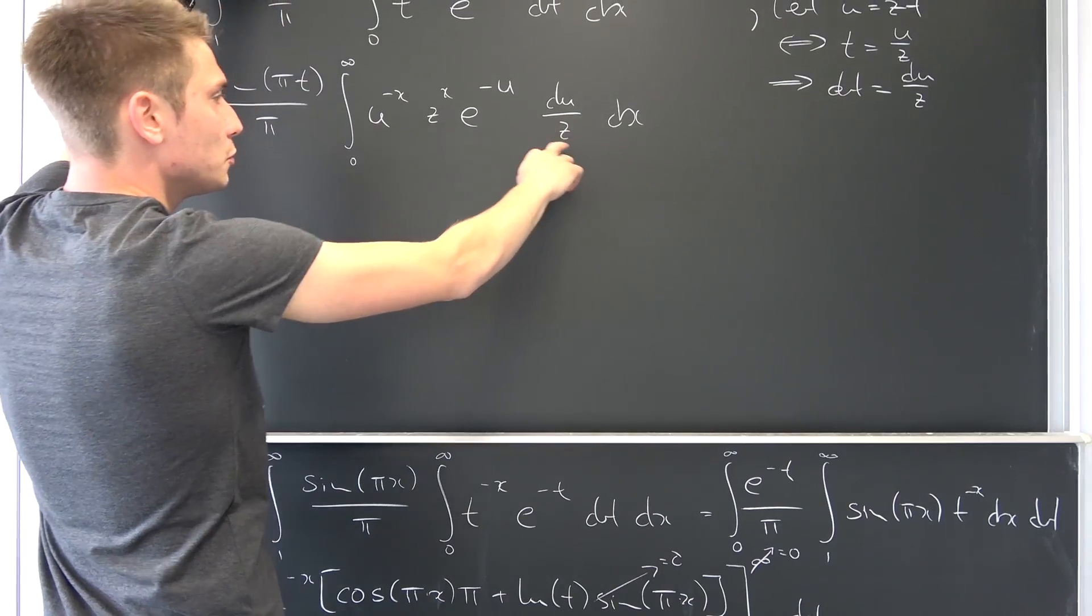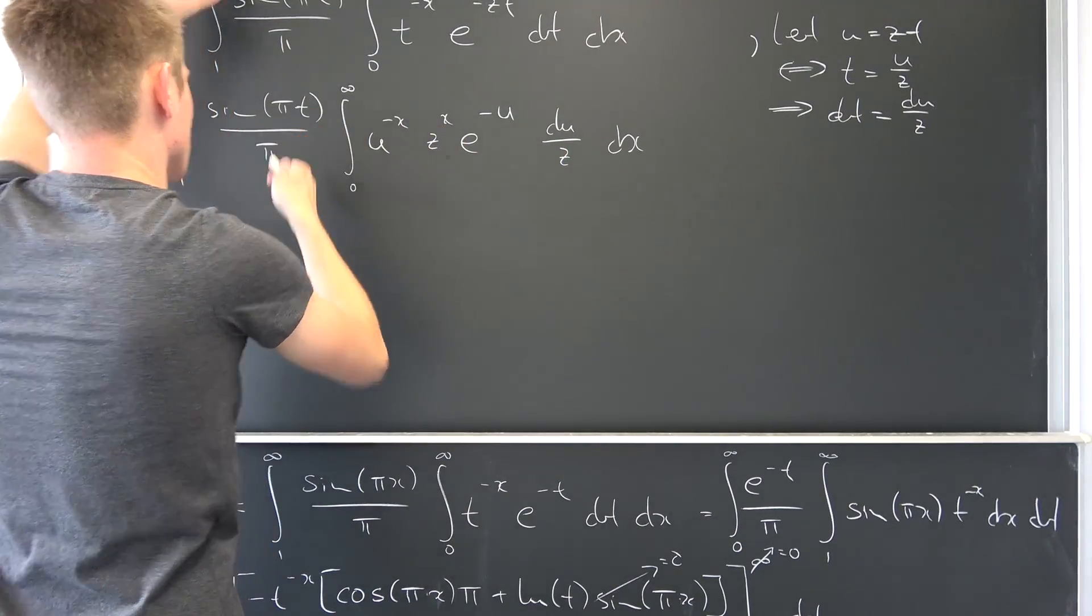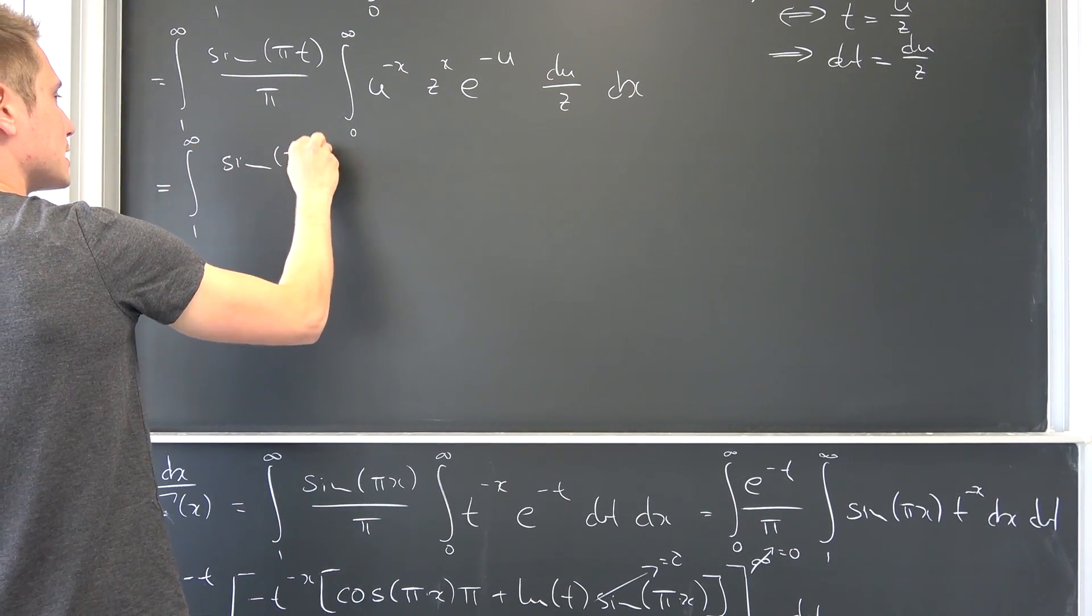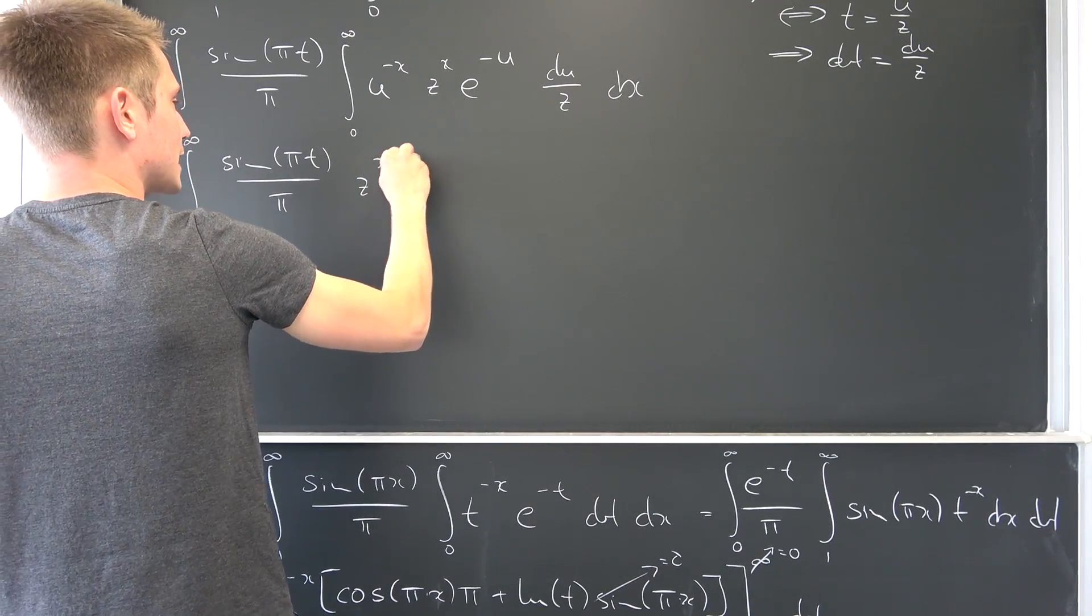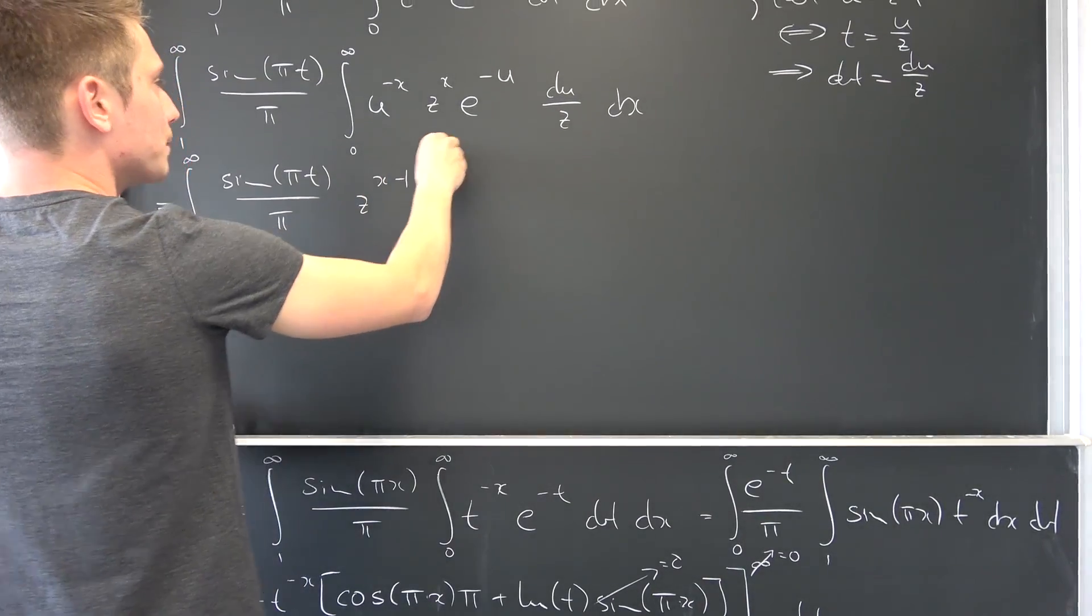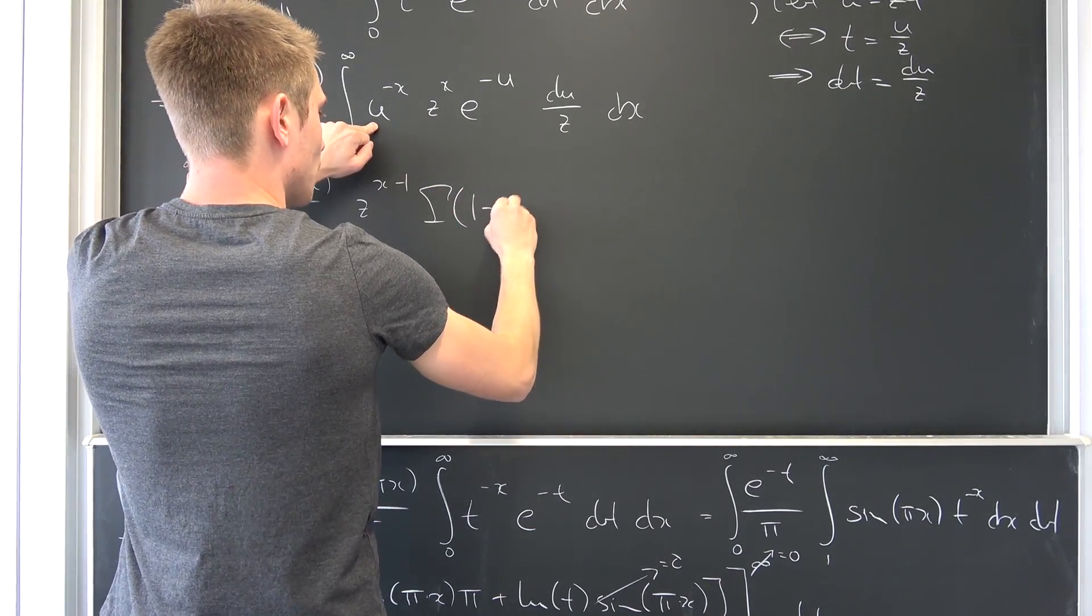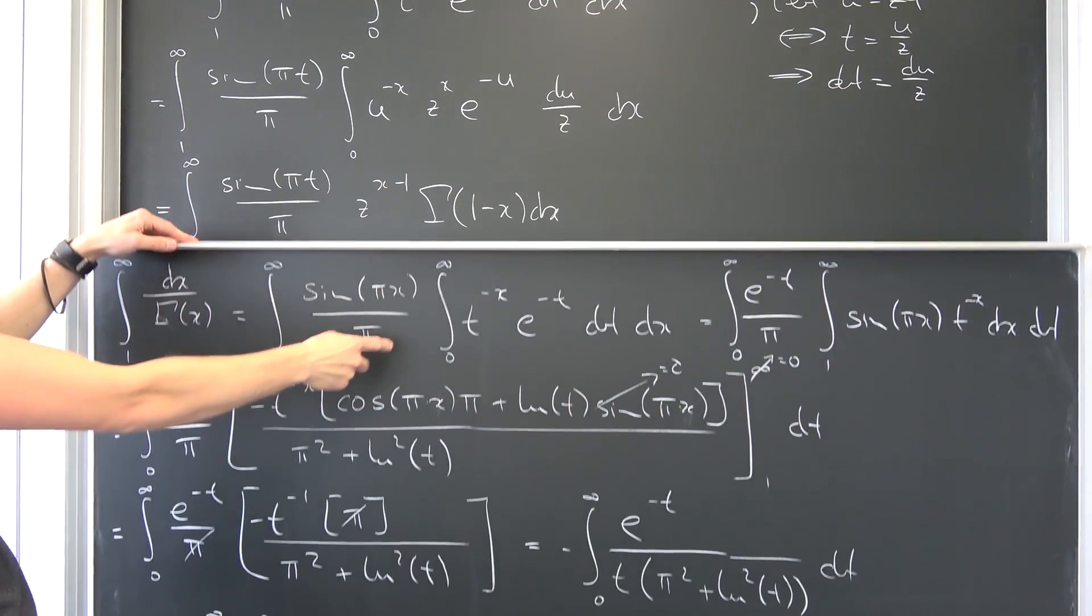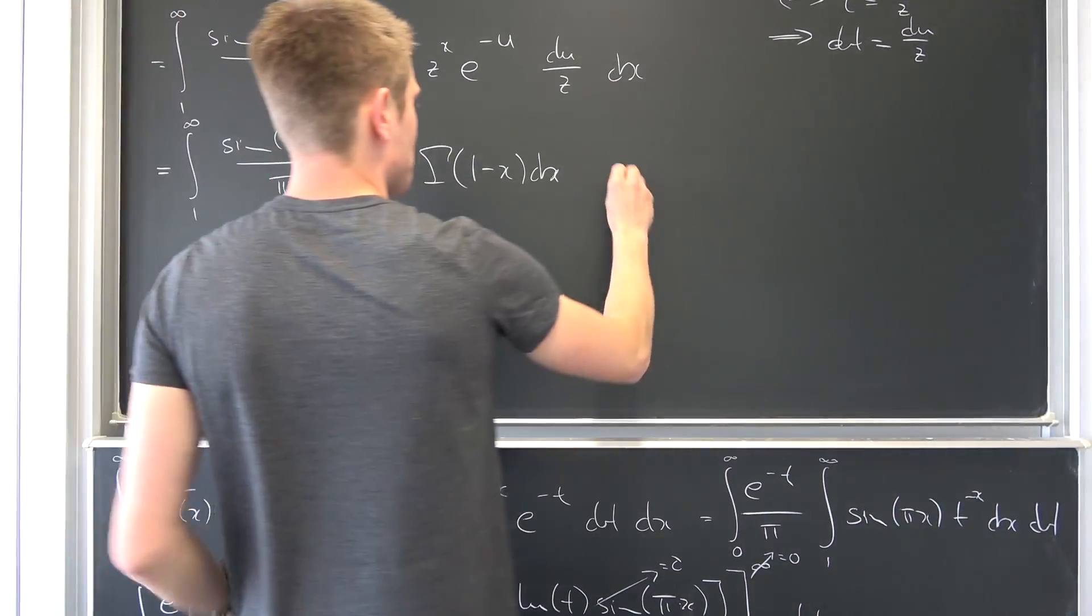Now with respect to u, this z to the x minus one power is just a constant. So let's bring it to the front. So integral from one to infinity of sine of pi times t over pi z to the x minus one power. And then we are going to get u to negative x. What I said, this is just going to be our gamma of one minus x. Integrate it with respect to x, and by the same arguments as before we can bring this together to actually get our gamma function back.